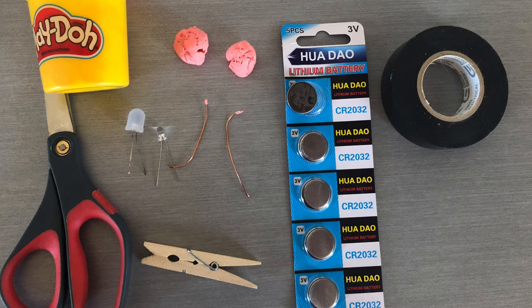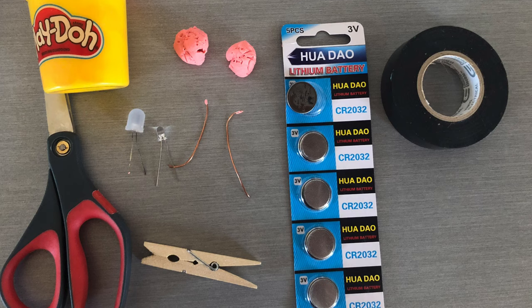Our materials for today are Play-Doh, coin batteries, uninsulated wire, a clothespin, an LED light bulb, and if you need it, electrical tape and scissors.